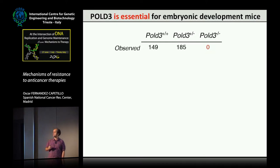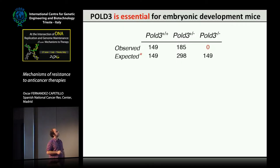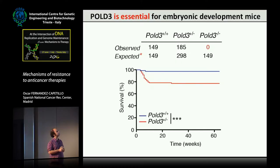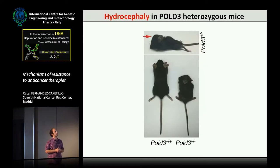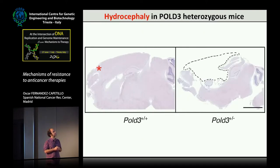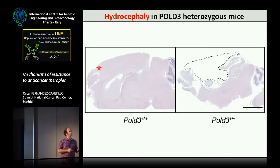Even some heterozygous are not being born — where you would expect 298, you get 185. From the heterozygous animals that are born, they're also not happy, and a fraction die in the first month. They die from hydrocephaly, which we've seen in other models with replication stress. They have a large skull, are very small, and when you open these animals the forebrain is missing and it's full of liquid. The message is that Pol D3 is toxic even in heterozygosity when eliminated in mammals.